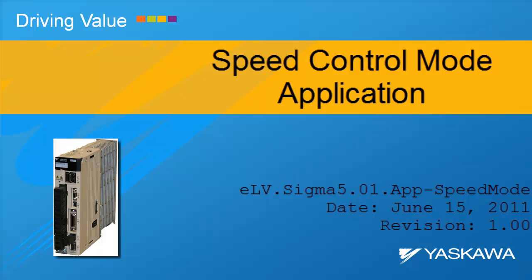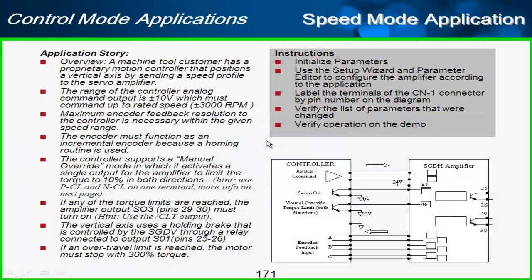In this video, let's look at how to use the parameter setup wizard to solve a speed mode application for the analog pulse version of the Sigma 5. Here's our application story: a machine tool customer has a proprietary motion controller that positions a vertical axis by sending a speed profile to the servo, and the range of the controller command will be plus or minus 10 volts.